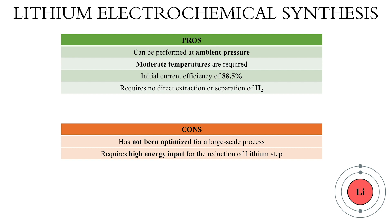Unlike the Haber-Bosch process, lithium electrochemical synthesis can be performed at ambient pressures and moderate temperatures. This minimizes the energy input into the system, but a high electrical input is still required in order to reduce lithium. Nonetheless, this process has showed great promise as an initial current efficiency of 88.5% has been reported for lithium electrochemical synthesis. It is important to note that the efficiency was reported for a laboratory-scale process, and there is still current research being conducted in an effort to scale up the operation to produce on a manufacturing scale.